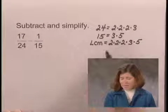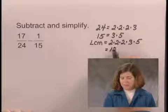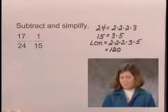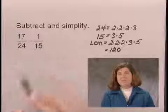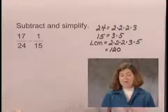Multiplying that out, we have that the least common multiple is 120. So now we have to write 17 24ths and 1 15th with a denominator of 120.